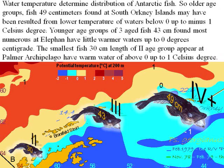Older age group fish of 48 cm found at South Orkney islands may have resulted from lower water temperatures below 0°C, down to −1°C. Younger age groups of three-aged fish, 43 cm, found most numerous at Elephant Island, have slightly warmer waters up to 0°C. The smallest fish, 30 cm in length of the two-age group, appearing at Palmer Archipelago, have warmer water above 0°C, up to 1°C.